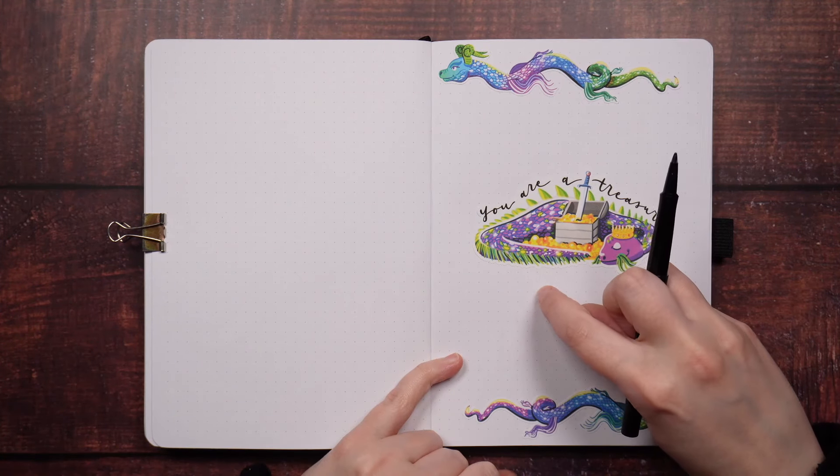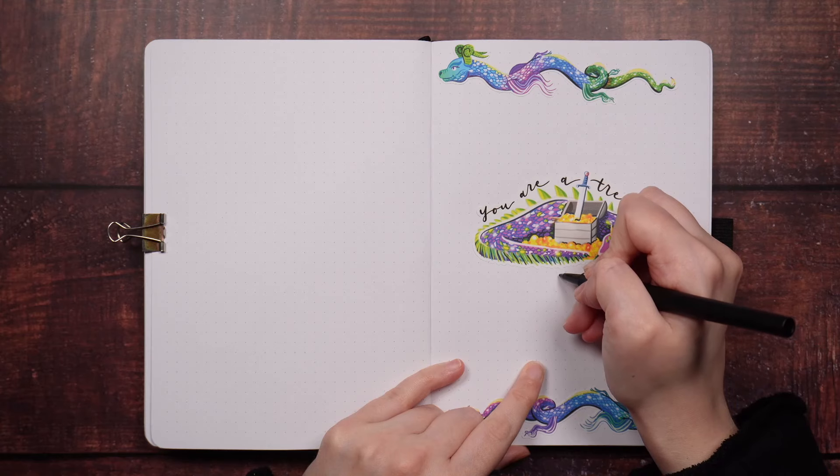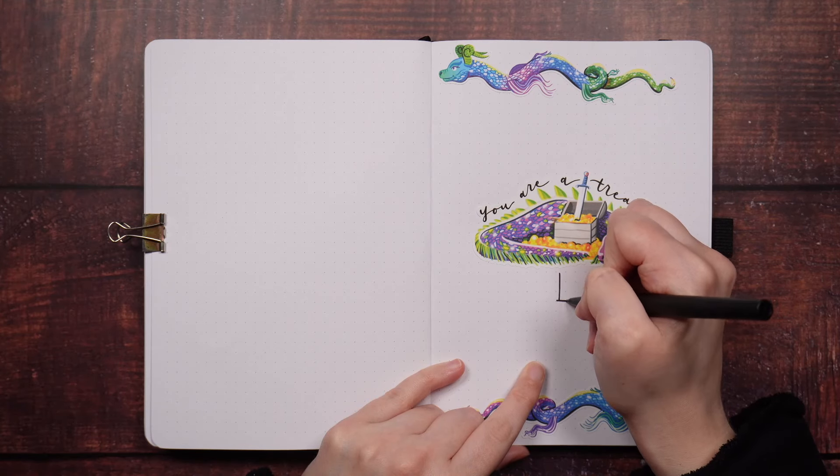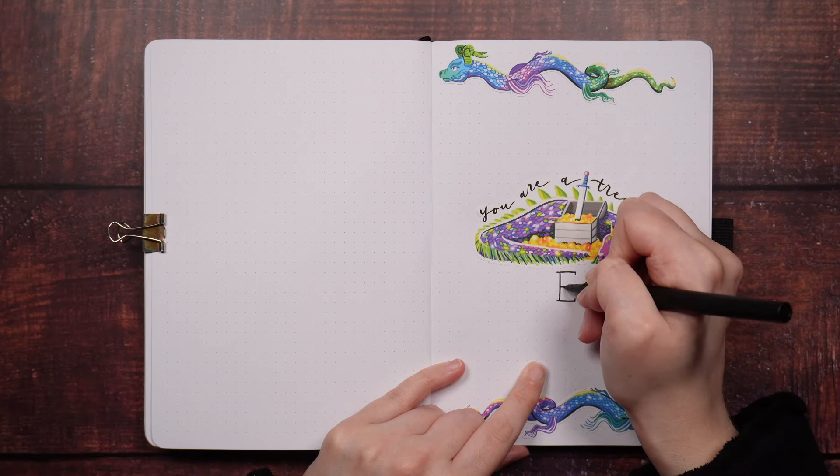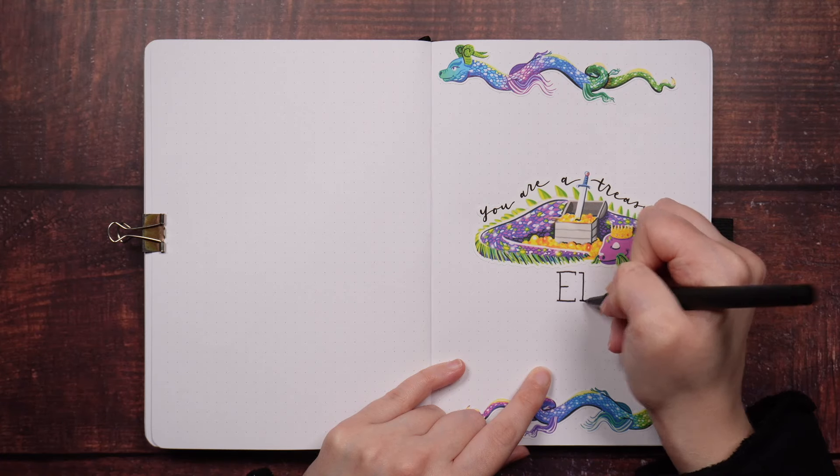And this is the third bullet journal that I've set up for him. The way that he uses his journal is quite different to how I use mine, which means that the layouts that I set up in here for him are quite different to the ones that I set up for myself.